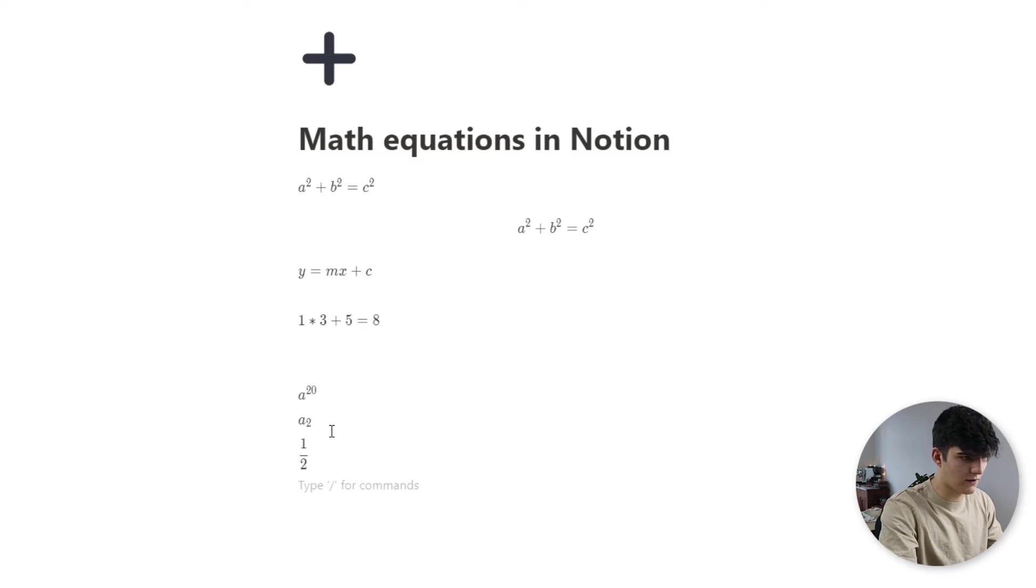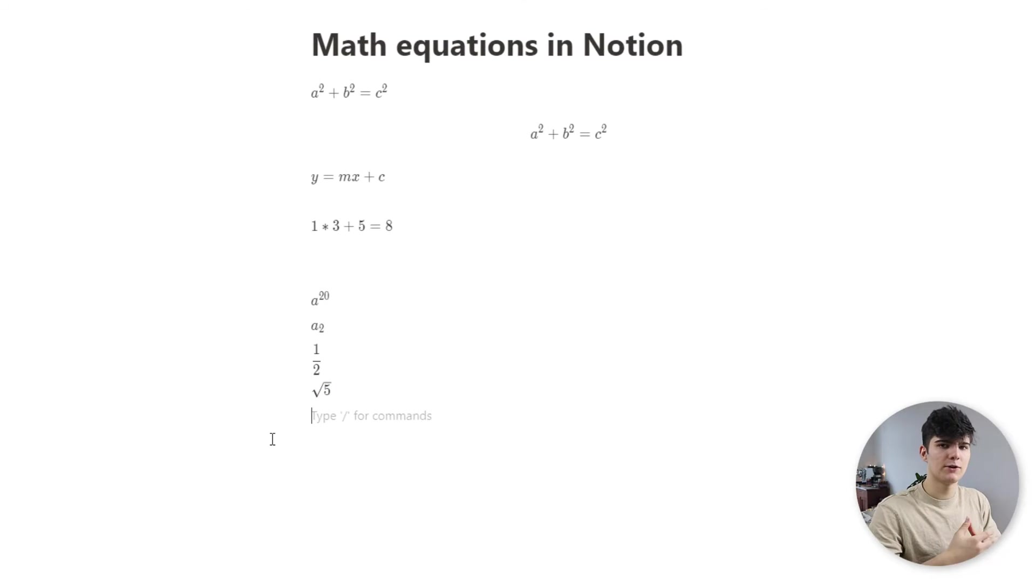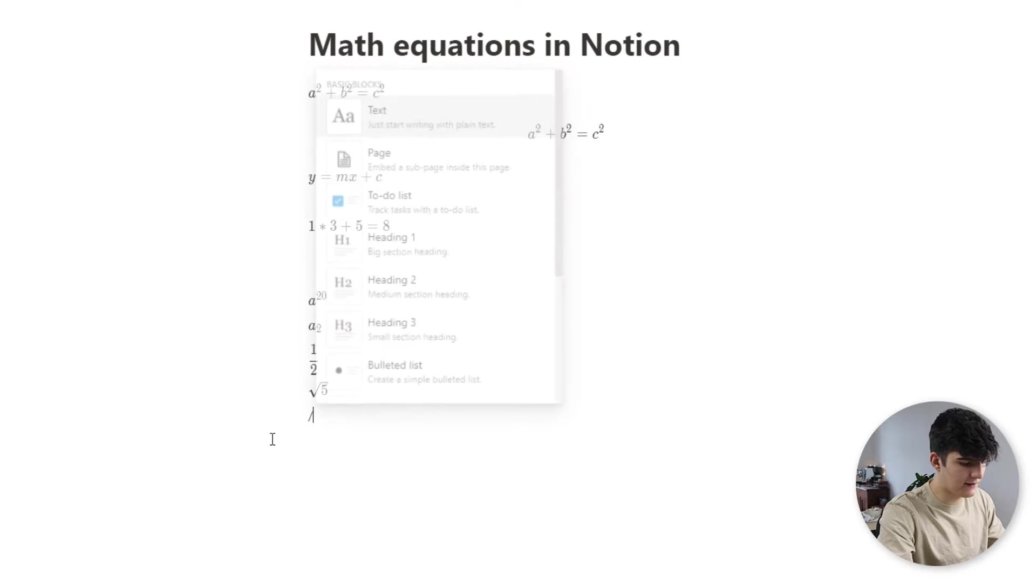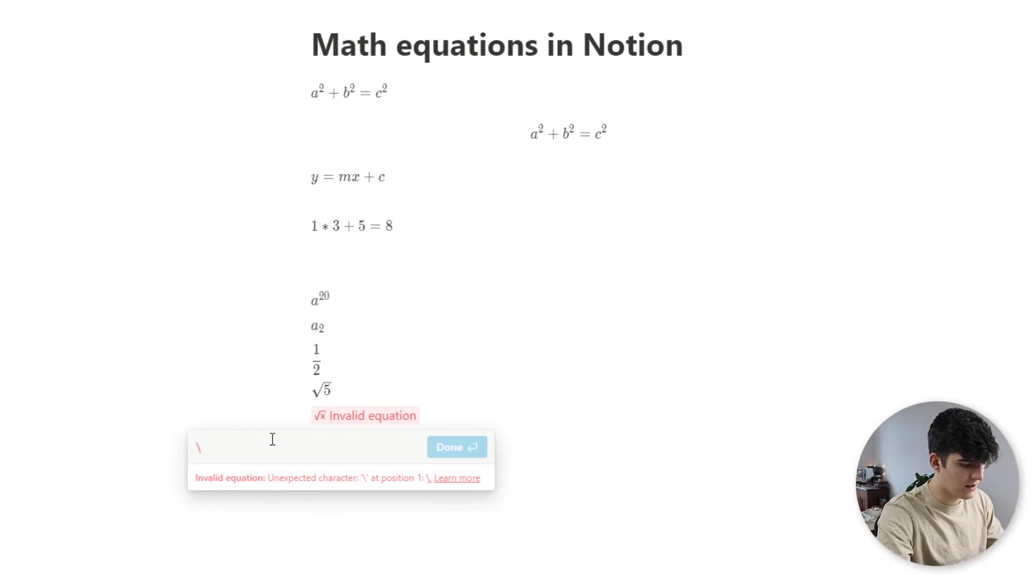Next, we'll check out the square root. So we'll just add in another math block yet again. And then we just do backslash sqrt. So this is the function for square root. And then we can enter in like five, for example. So this will be the square root of five. Now, if you want to have the cubic root, then we just type in the same exact thing. So backslash sqrt. And then in these square brackets, we'll just write in something like three. And then we want the cubic root of let's say eight. And as you see, this is how it shows up in Notion.